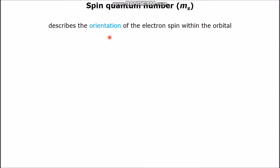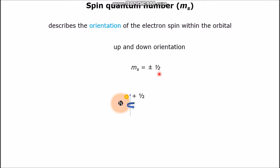Finally, the last quantum number is the spin quantum number, written as ms. The spin number determines the orientation of the electron spin within the orbital. An electron can have an up and down orientation, up being positive and down being negative. The value is plus and minus one half. Note that when electrons are contained within an orbital, the electrons must have opposite spins.